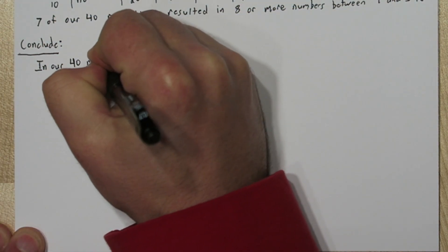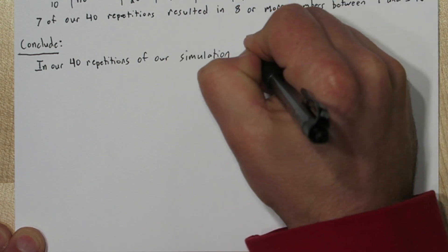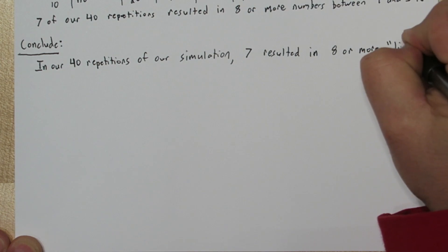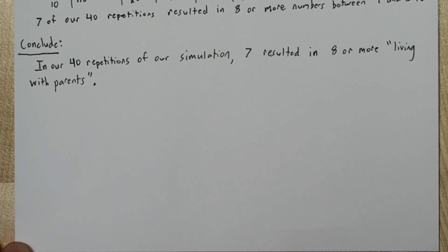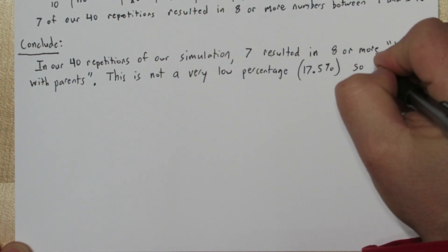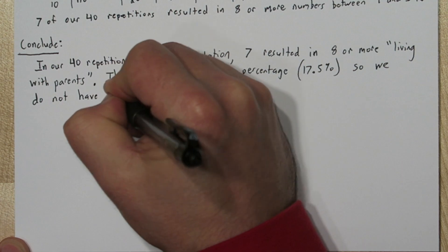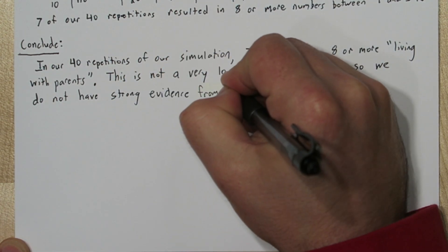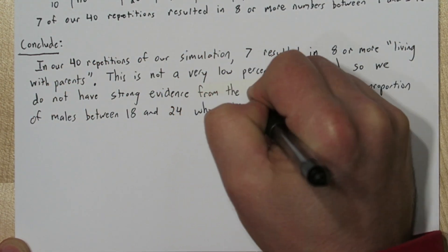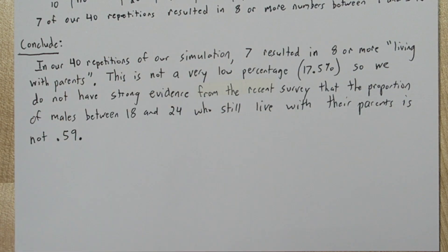So for our conclusion we'll say in our 40 repetitions of our simulation 7 resulted in 8 or more living with parents. This is not a very low percentage. It's 17 and a half percent actually. So we don't have strong evidence from the recent survey's result the 8 out of 10 who said they lived with their parents that this proportion has changed. It might in fact still be 59%. Because getting 8 out of 10 in a survey if the true proportion is 59% is not that rare. It apparently happens about 17 and a half percent of the time according to our simulation.